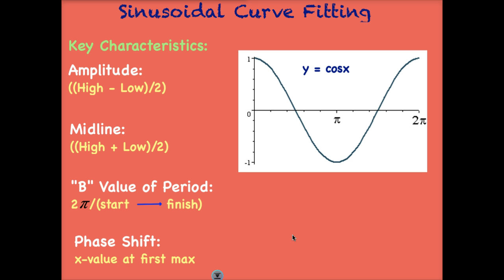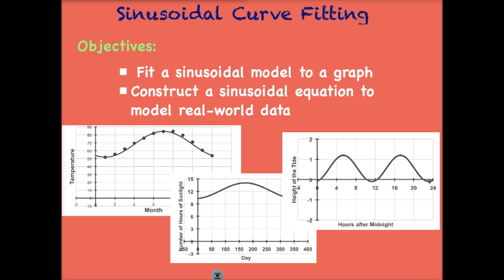Let's look at a typical cosine function. When we are recreating graphs or creating equations to model situations, the easiest graph to create is a cosine function because we have a clear max and a clear min, whereas a sine function it's hard to determine where that initial point is.